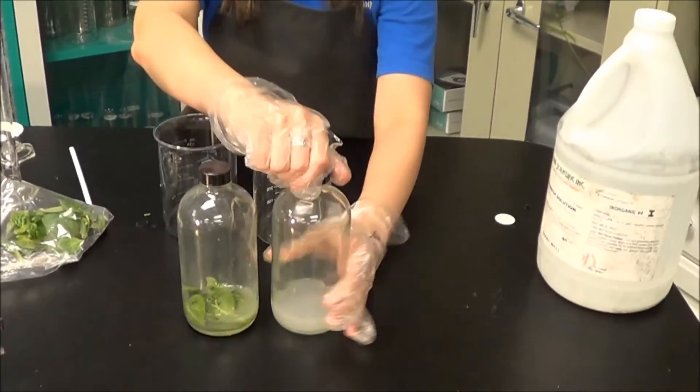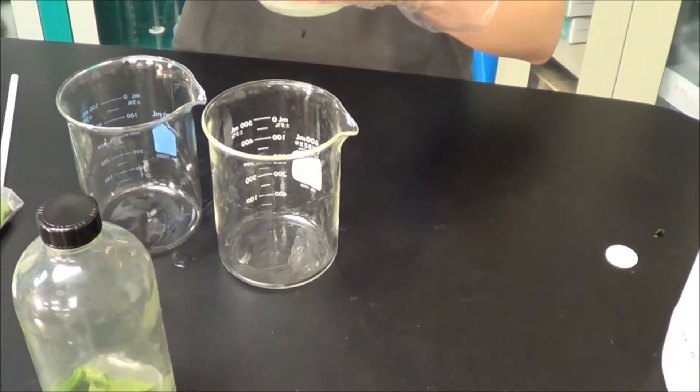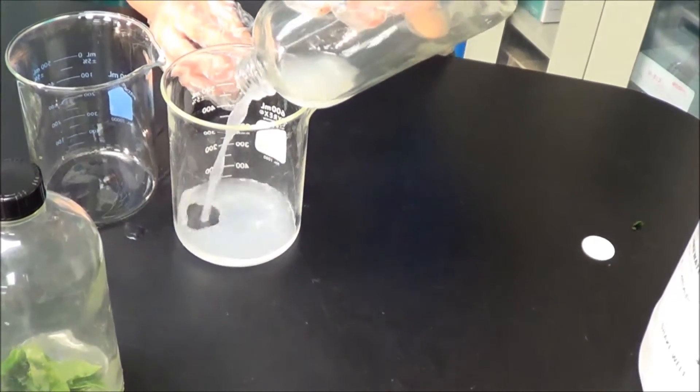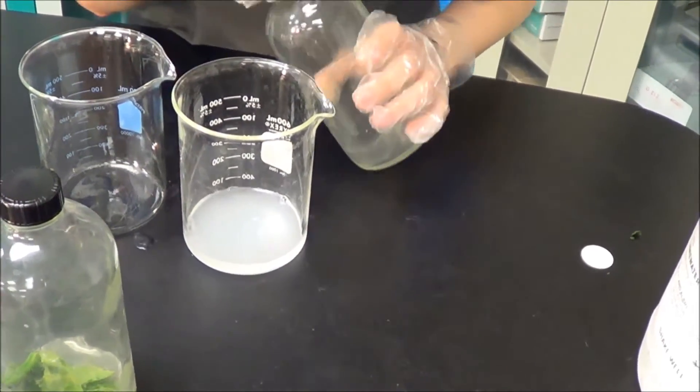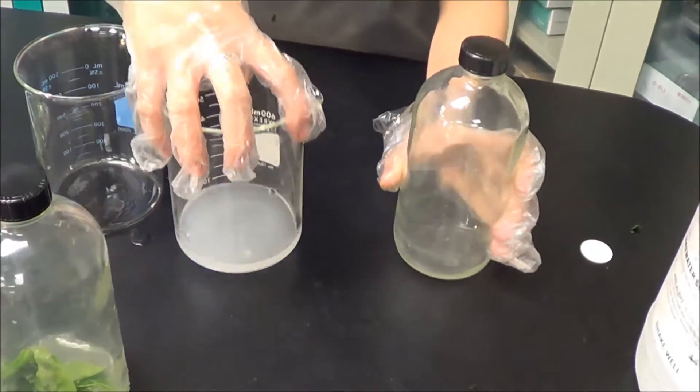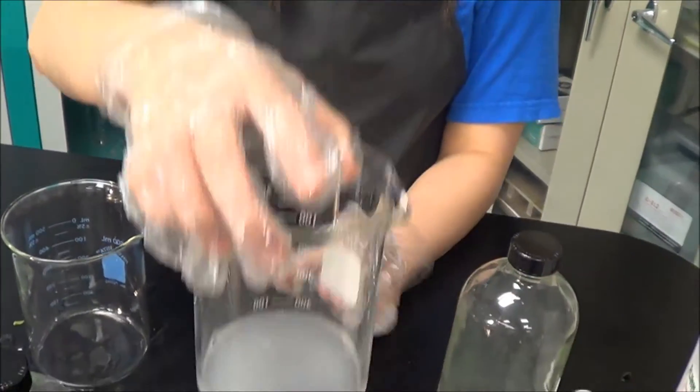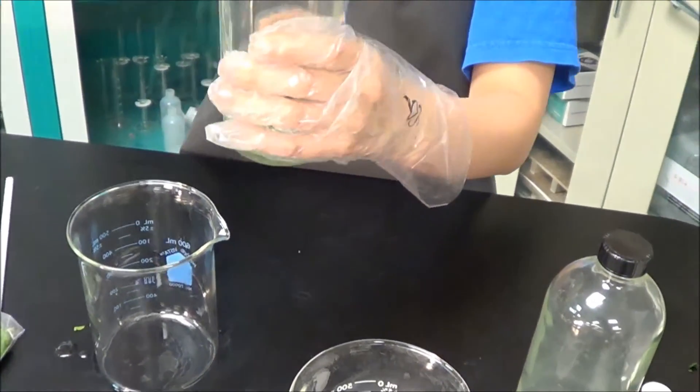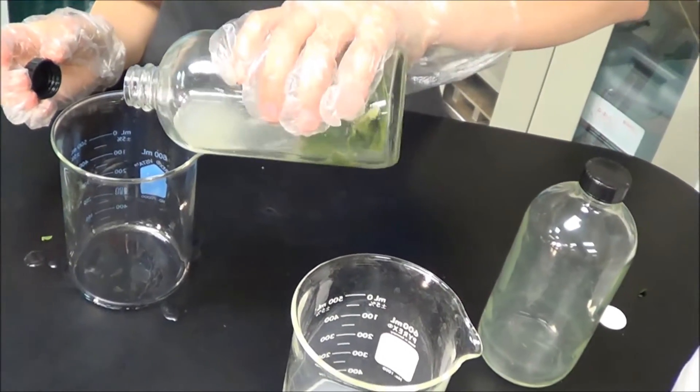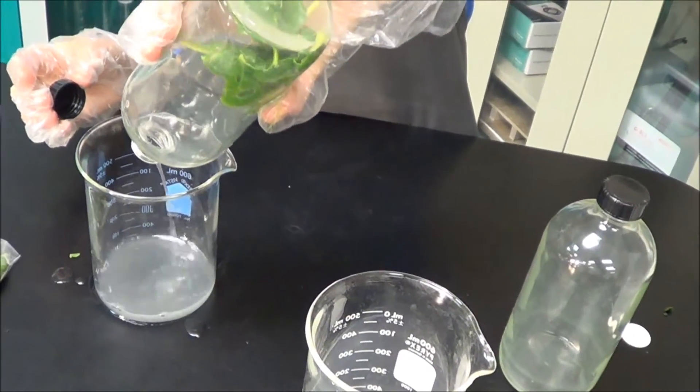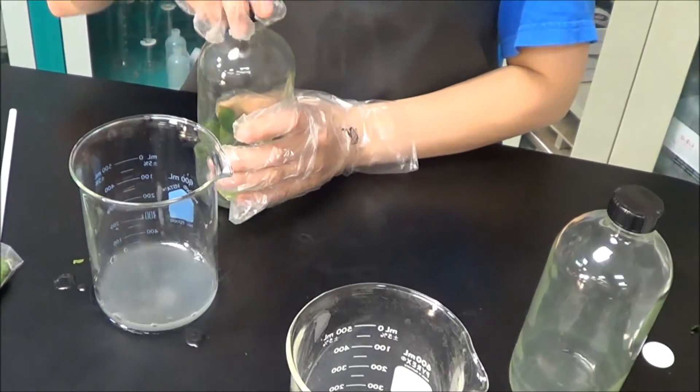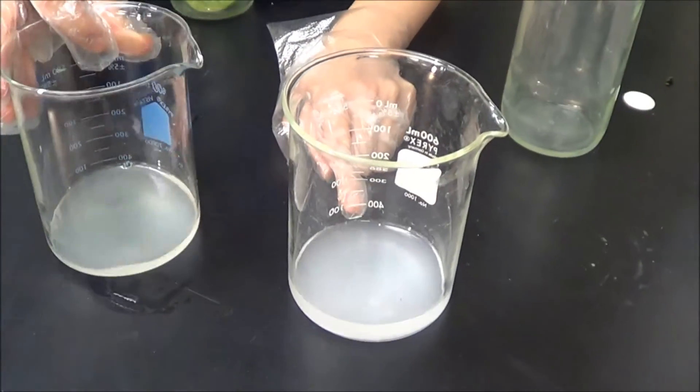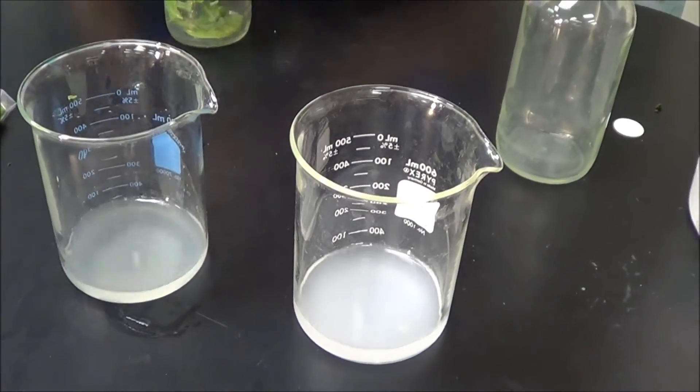And so now we're going to take the one without spinach and pour it into a clear container. And you'll notice that it has now become a milky solution because of the carbon dioxide. And on this one, the spinach absorbed the carbon dioxide. This one is much clearer than this one since it created oxygen and this one absorbed oxygen and created carbon dioxide.